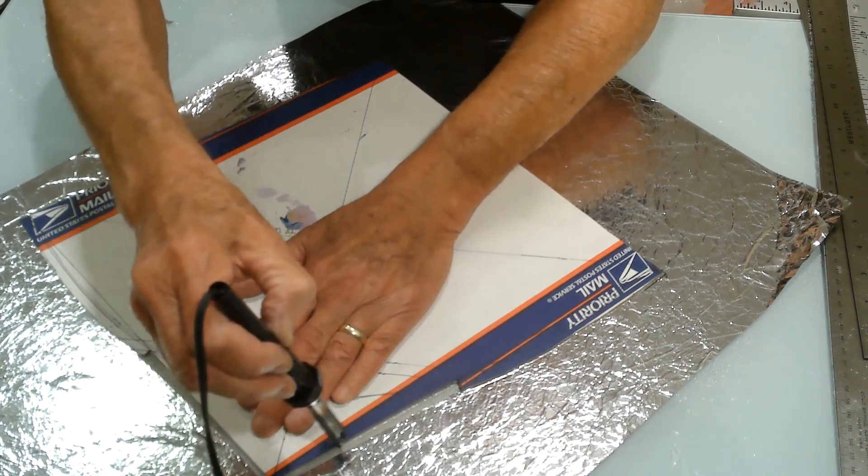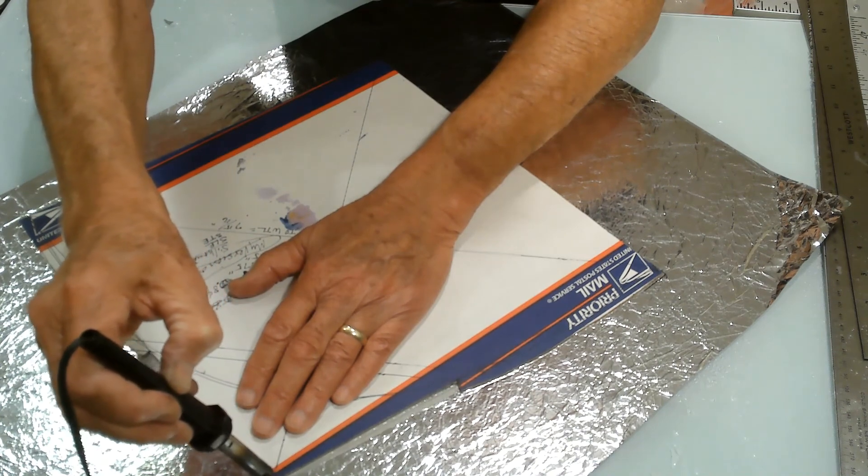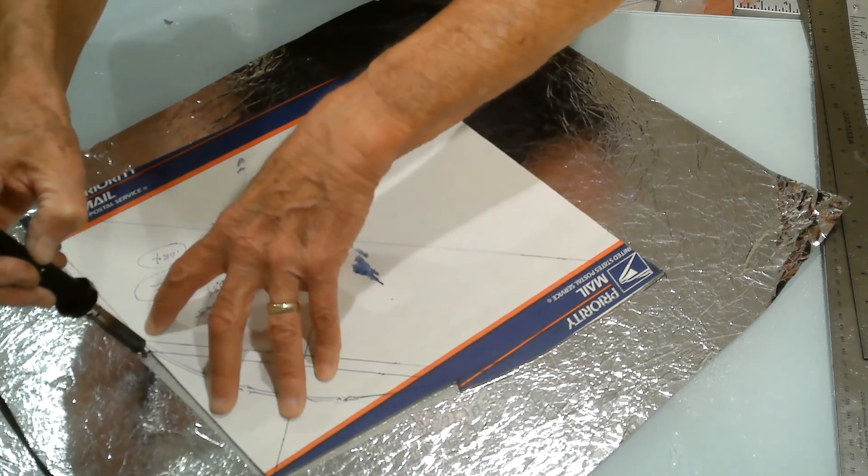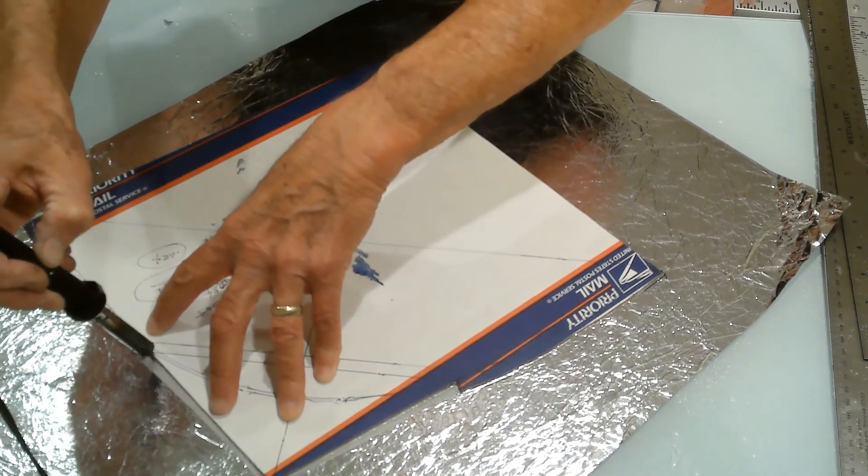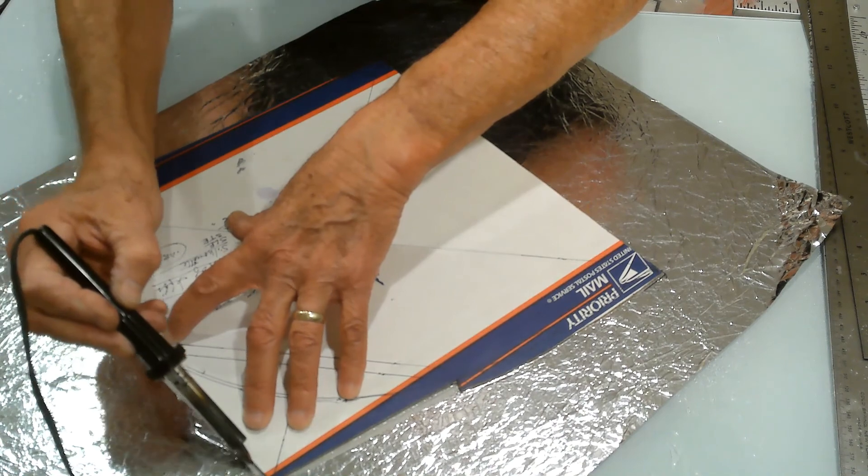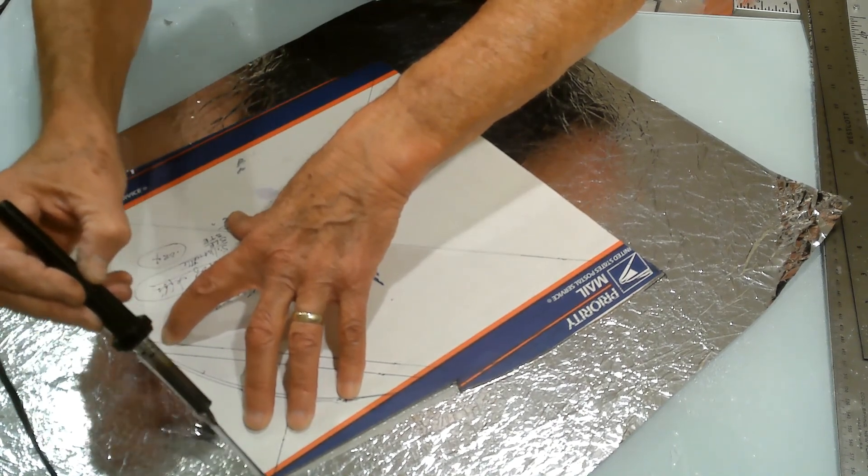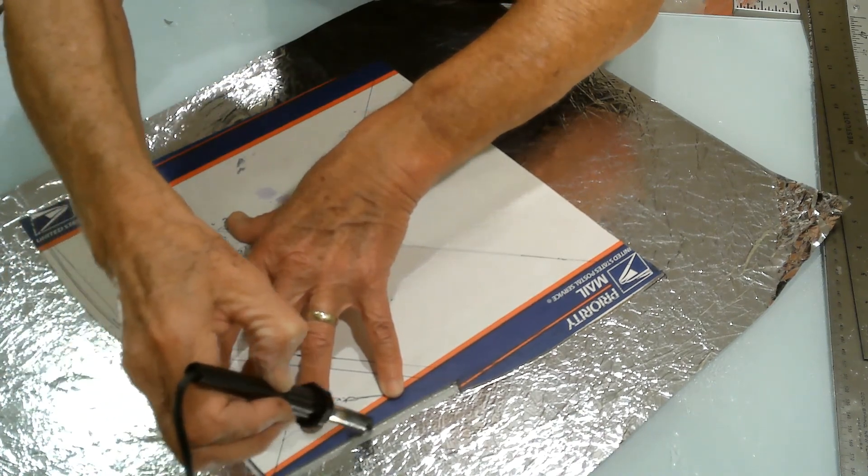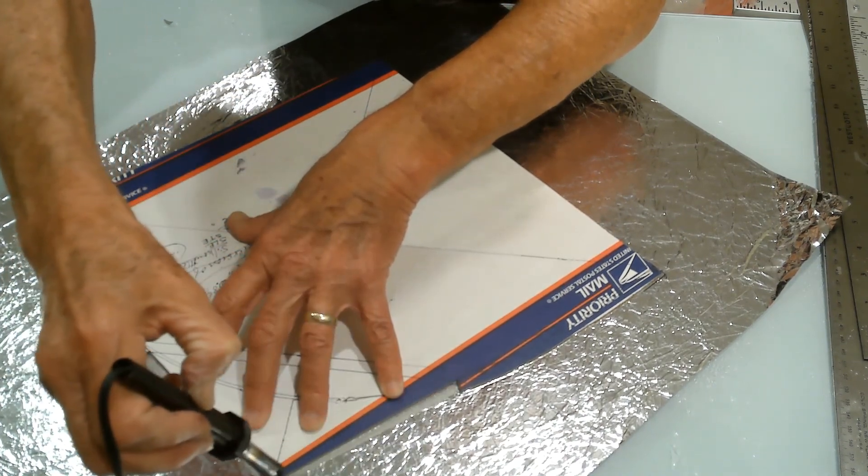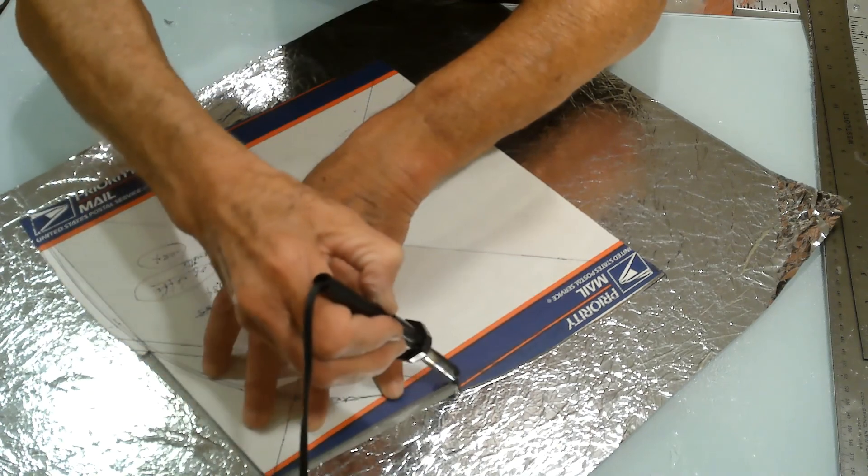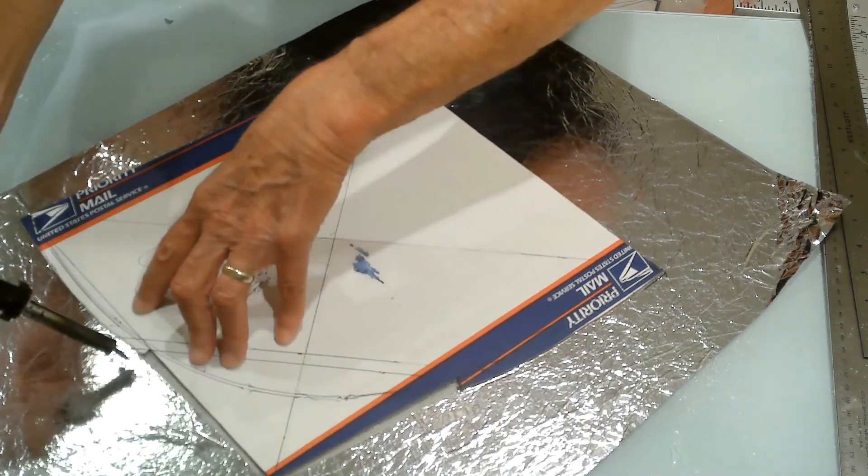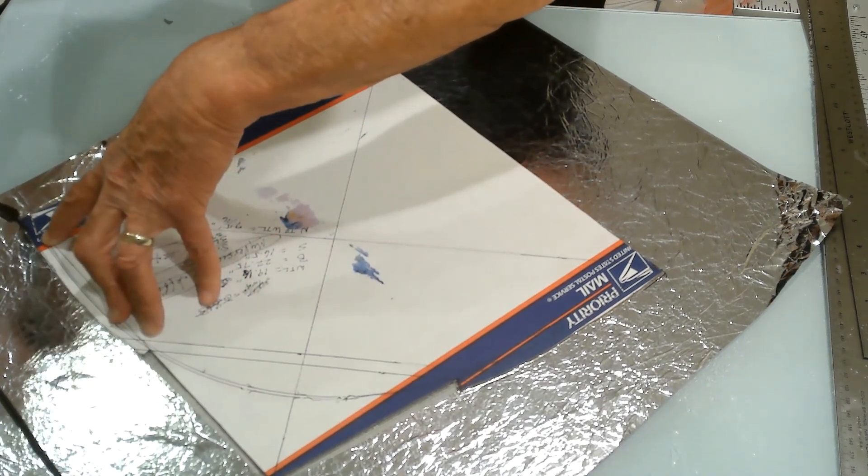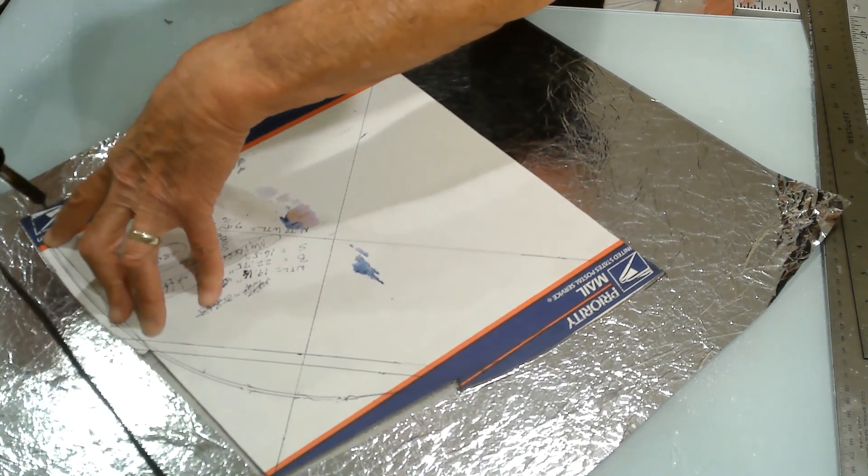This is one reason I always use templates, because I prefer hot cutting the kite sail. As a result, it requires a template for the hot cutter to follow. Where the tape is, sometimes it's a little bit tricky to get the hot cutter to cut through it all, but anyway, we'll finish it up here.